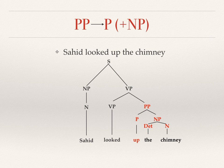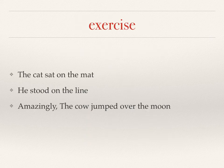Alright, I think that's the simple example you can follow. Now what you're going to do is just do the exercise. There are three clauses: 'The cat sat on the mat,' 'He stood on the line,' and 'Amazingly, the cow jumped over the moon.'